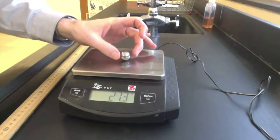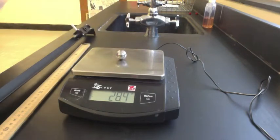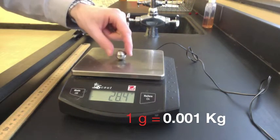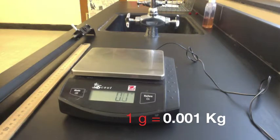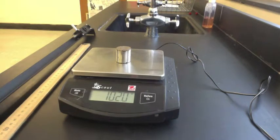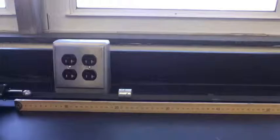First, we need to find the mass of the steel marble. It is shown in grams, but we need to convert it to kilograms. Then find the mass of the stationary object, a zinc cylinder.